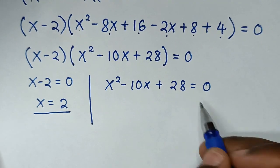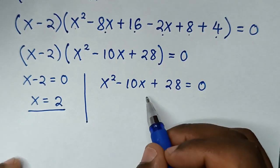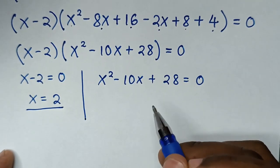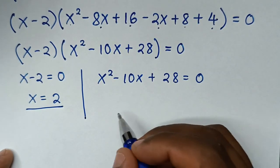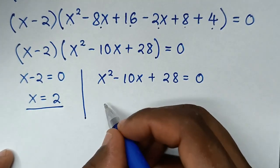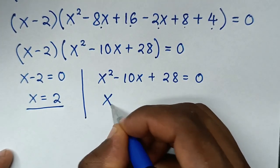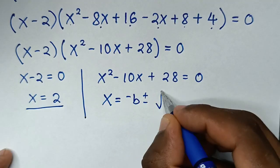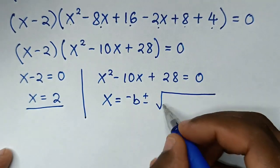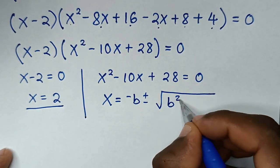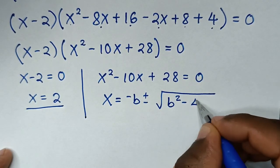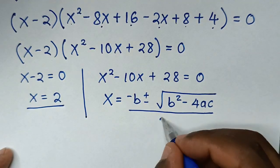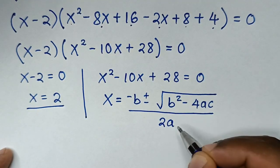To solve the quadratic equation x² - 10x + 28 = 0, we use the quadratic formula: x = (-b ± √(b² - 4ac)) / 2a.